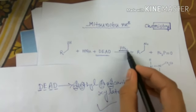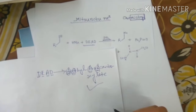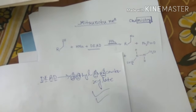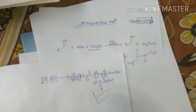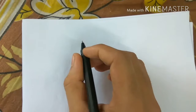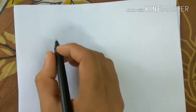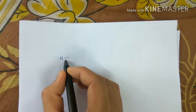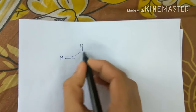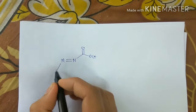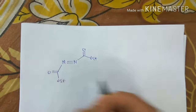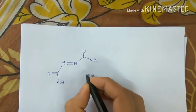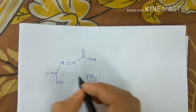The other reagent is triphenylphosphine. So that's all the key reagents. Next, we'll move on to the mechanism of the Mitsunobu reaction. For the Mitsunobu reaction, we have this very important compound called DEAD in our hand, and there is triphenylphosphine.